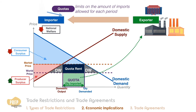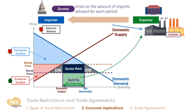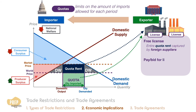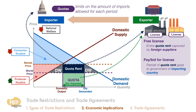A quota can be implemented by issuing import licenses to foreign suppliers. If the licenses are free, then the entire quota rent goes to foreign suppliers. If foreign suppliers are required to pay or bid for the licenses, then a portion or all of the quota rent goes to the government of the importing country.